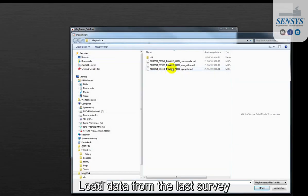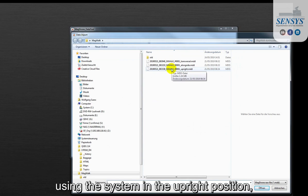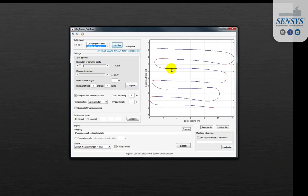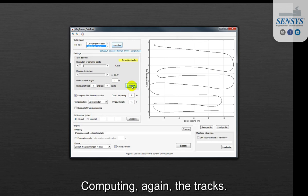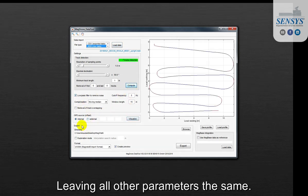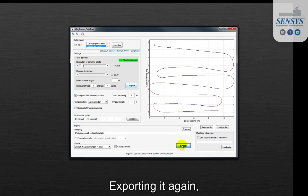Load data from the last survey using the system in upright position. So loading that, computing again the tracks, leaving all other parameters the same, exporting that again.